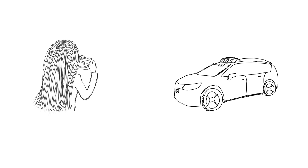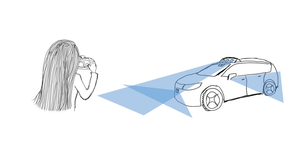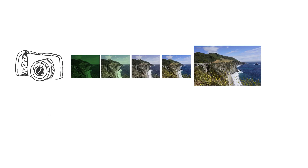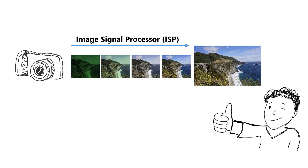When we think of cameras, we usually think of them being used by humans to take pictures. Although humans are generally considered to be the primary consumers of images captured by cameras, machines have also started consuming images on a very large scale. Today, virtually all computer vision applications use cameras optimized for human viewers. The image signal processors in those cameras are usually tuned based on photography-driven image quality characteristics that are important to the human visual system.